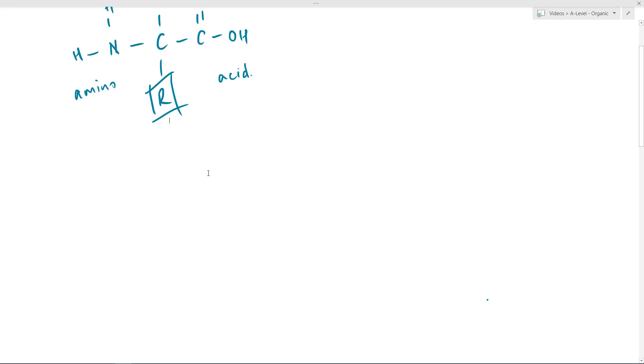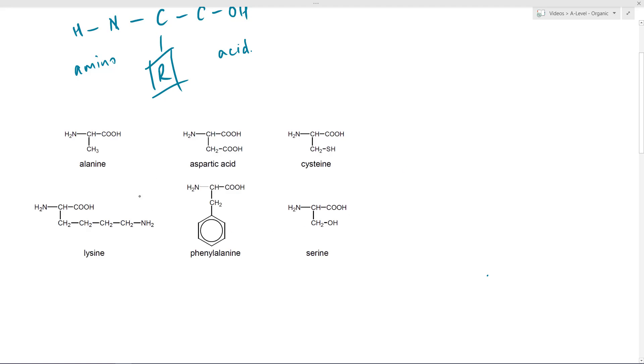Your data sheet that you're given in the exam has a number of amino acids within it. You are given six: you can see alanine, aspartic acid, cysteine, lysine, phenylalanine and serine. Now, there are many more than this, but the key thing to look at these is they all have the same generic structure.